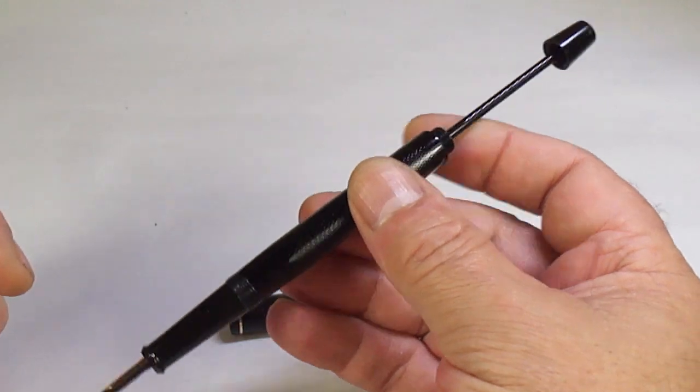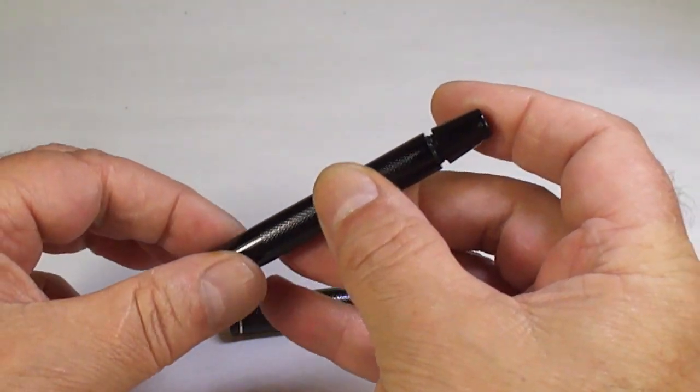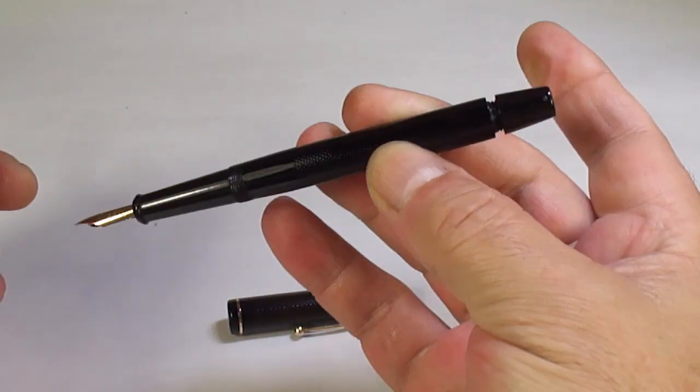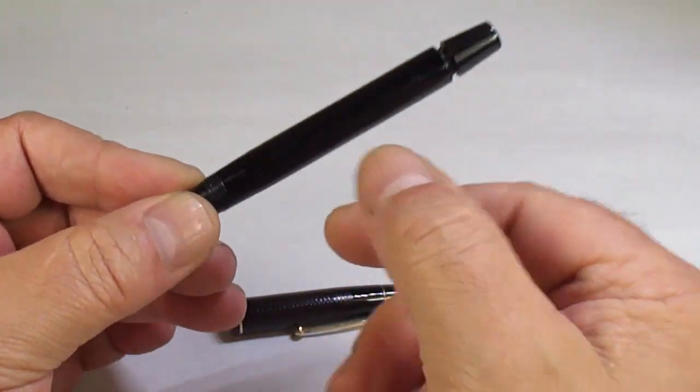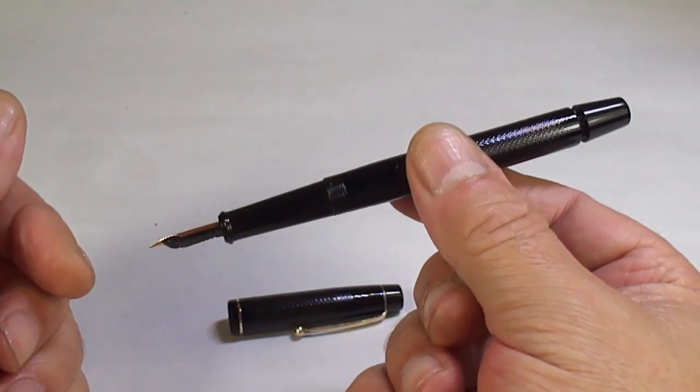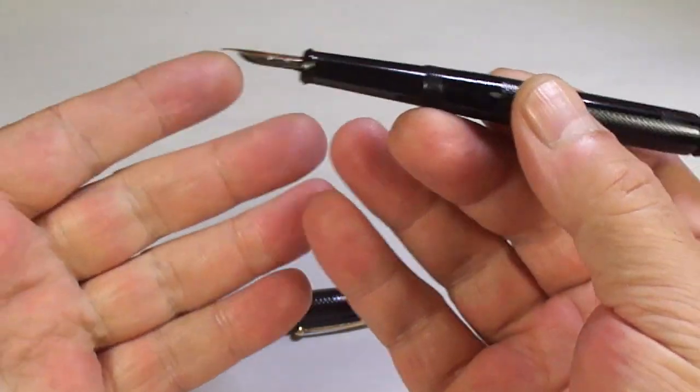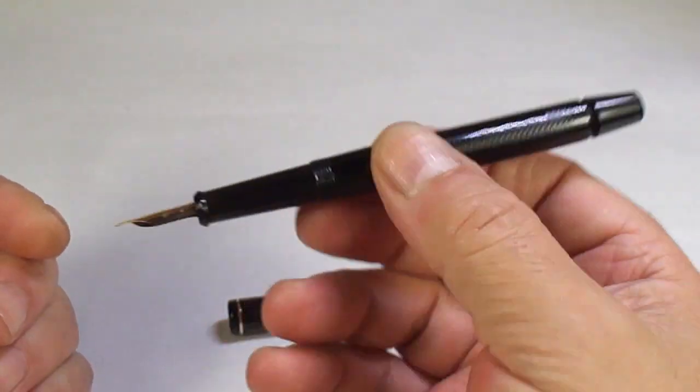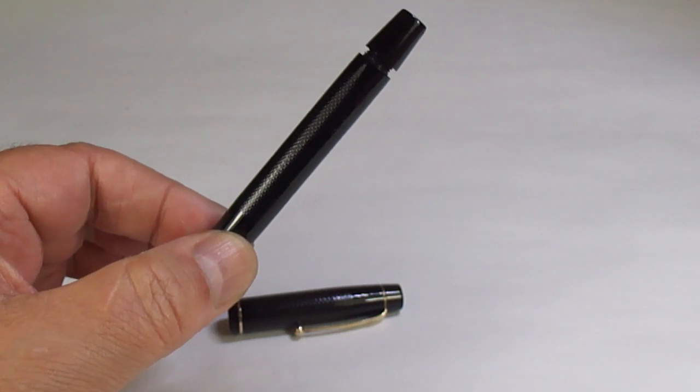What we do is simply unscrew the plunger knob, pull out the plunger like so, we dip the nib and a little bit of the section into the ink, and we press down in one swift movement. It's what we term as a plunger filler. Some of you people out there may call it a vacuumatic or vacuum filler. Everyone to their own, I call them plunger fillers.